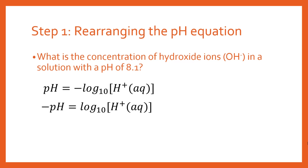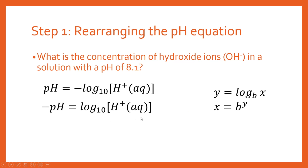To rearrange this, the first step is to multiply both sides by minus one. We then need to rearrange the logarithm to get an expression for our hydrogen ion concentration. For a logarithm in this form — y equals log to the base b of x — we can rearrange for x by doing b to the power of the opposite side, so x equals b to the power y.